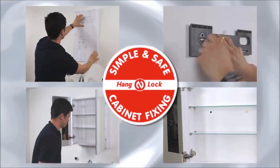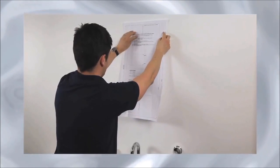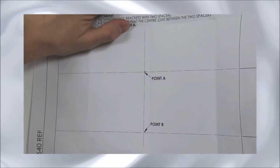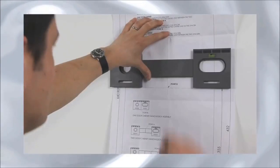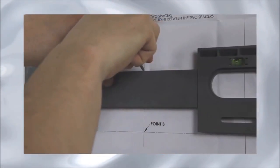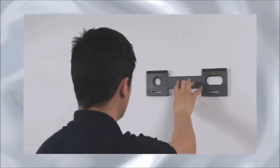So how does it work? It's simple. First, there is a paper template supplied which you use to decide on the position of the cabinet on the wall. You mark the wall through the template and then line up the hang and lock bracket. Then mark the screw holes anywhere within the bracket's openings.